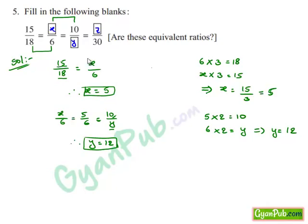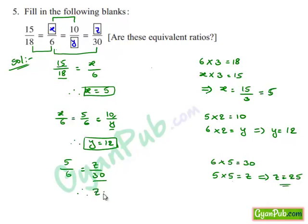Now, take down the second and fourth fractions, that is, 5 upon 6 is equal to z upon 30. Here, we can observe that the denominator in the RHS is obtained by multiplying 6 with 5. Similarly, numerator z is also obtained by multiplying numerator 5 with 5, which implies z is equal to 5 times 5, that is, 25. Therefore, z is equal to 25.